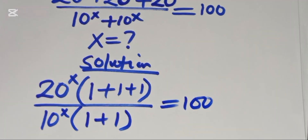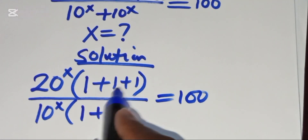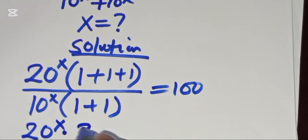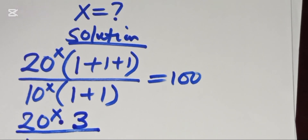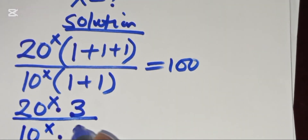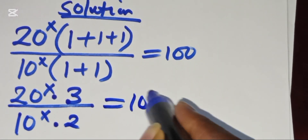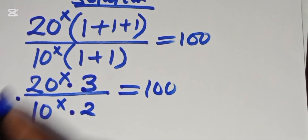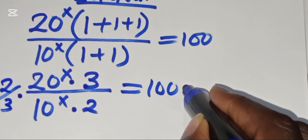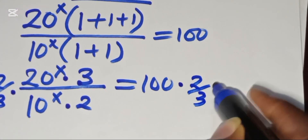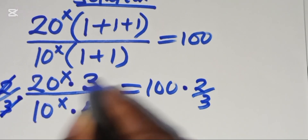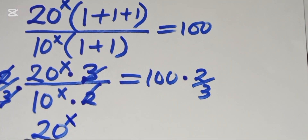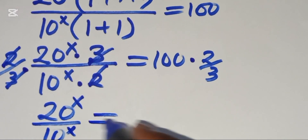So 1 + 1 + 1 equals 3, and 1 + 1 equals 2. This gives us 20^x multiplied by 3, divided by 10^x multiplied by 2, equal to 100. We then multiply both sides by 2/3 to simplify.